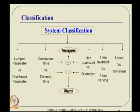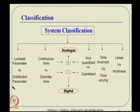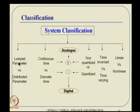There are various classifications of systems. Lumped parameter systems have no relative motion between molecules — if the center of gravity moves, every particle moves the same way. Distributed parameter systems have relative motion between molecules and can only be described using partial differential equations, while lumped parameter systems use ordinary differential equations. There are also continuous-time systems versus discrete-time systems, and quantized versus non-quantized variables.